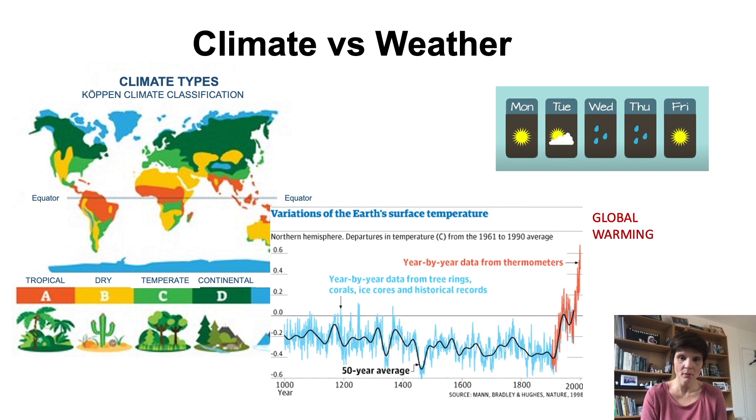In this graph, the blue and the red lines represent annual average global temperature, so weather variability. And the black line is 50 years global temperature average representing climate variability. As you can see, from 1900 approximately, the temperature shows an increasing trend, the famous climate hockey stick. This shows that global warming is happening.